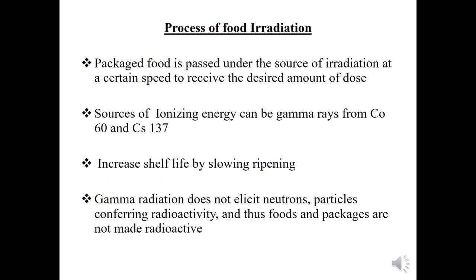In the process of food irradiation, packaged food is passed under a source of irradiation at a certain speed to receive the desired amount of dose. The source of ionizing energy can be gamma rays from cobalt-60 and cesium-137 (Cs-137). These are the main sources of ionizing radiation used in food irradiation.